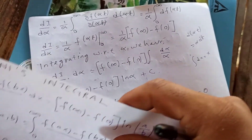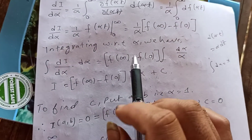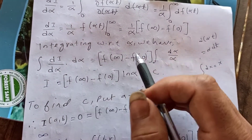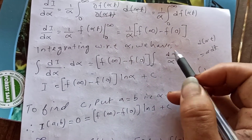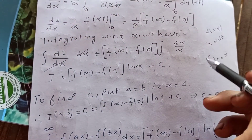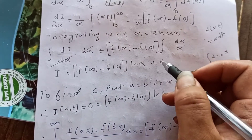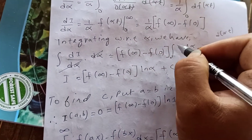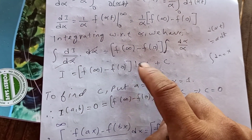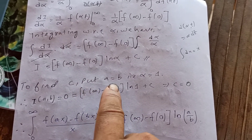Now using the Feynman technique, we integrate back with respect to α. Integrating both sides: I(α) = [f(∞) - f(0)] · integral of dα/α = [f(∞) - f(0)] · ln(α) + C.